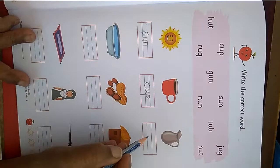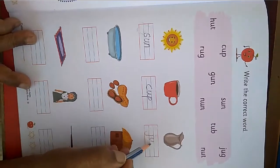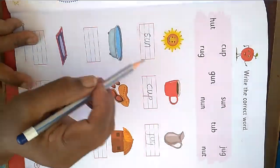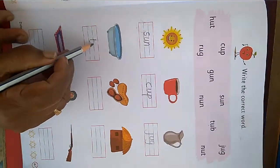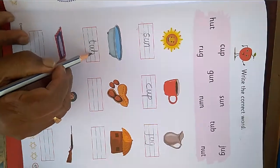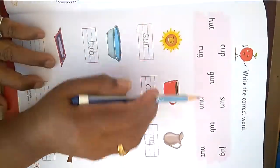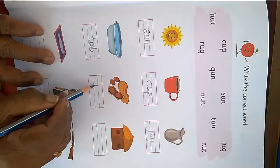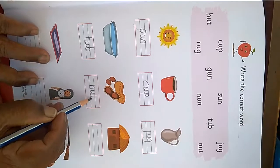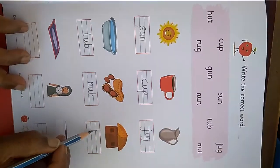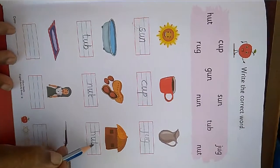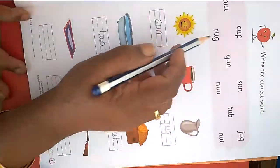J U G jug. T U B tub. N U T nut. H U T hut. R U G rug.